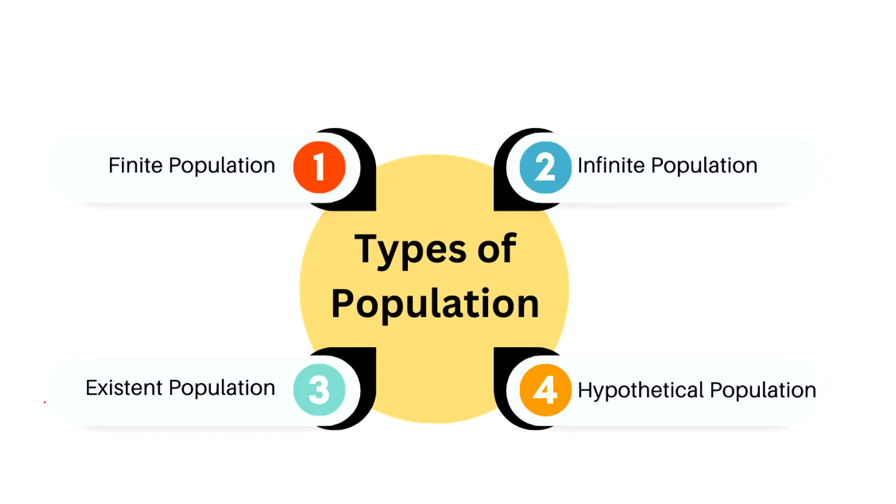When the number of elements of the population is fixed, the population is said to be finite. Whereas when the number of units in a population is uncountable, then the population is said to be infinite. Further, the population which comprises objects that exist in reality, it is called existent population.